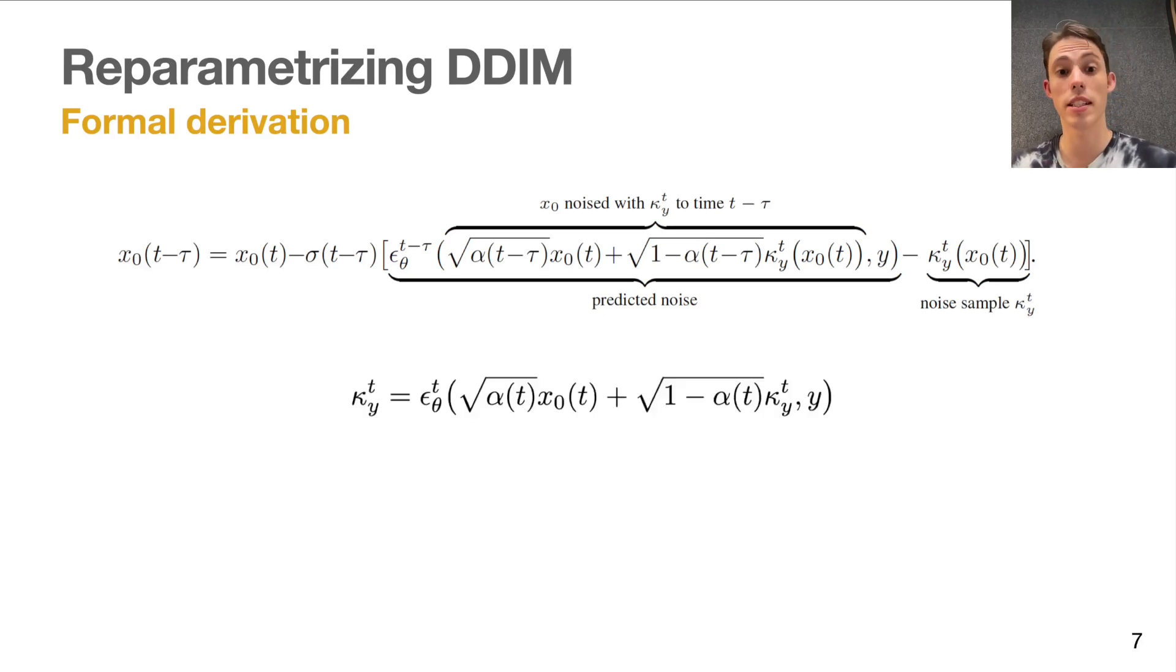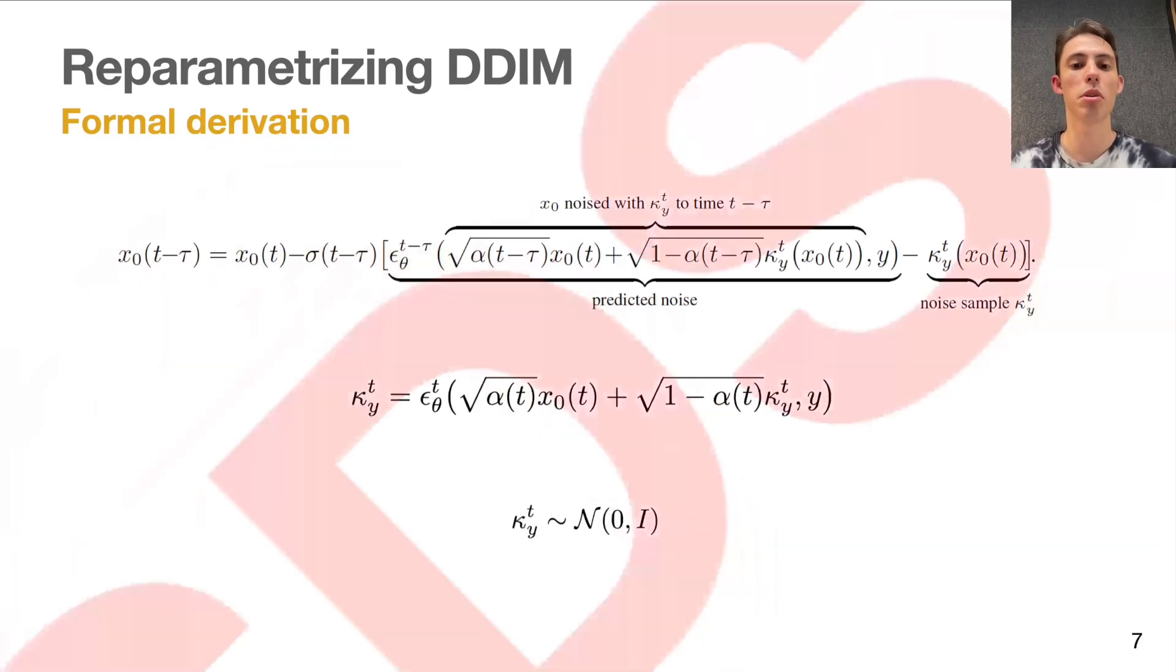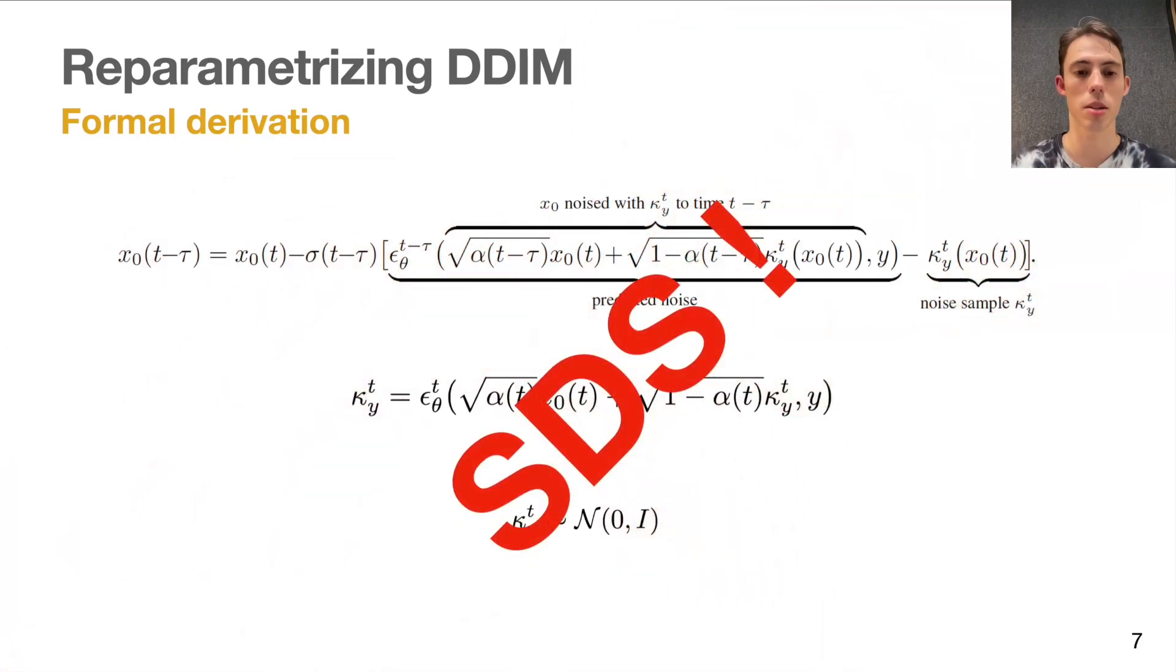In order for the dual process to match the DDIM precisely, kappa needs to be a solution of a fixed point equation, which effectively inverts noise prediction of the diffusion model. It is very hard to solve this equation precisely. If we ignore this structure, and we just randomly sample kappa from the Gaussian distribution, we will obtain the precise update rule in score distillation sampling.